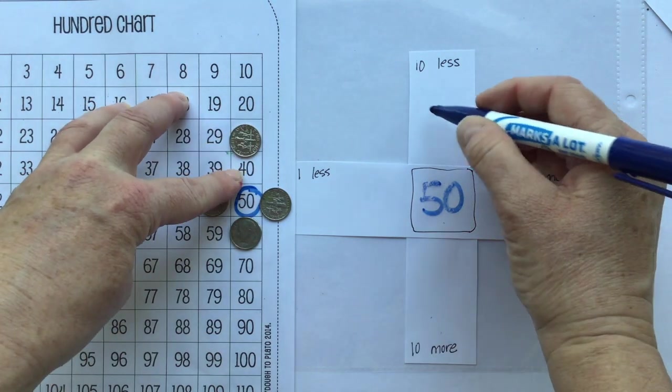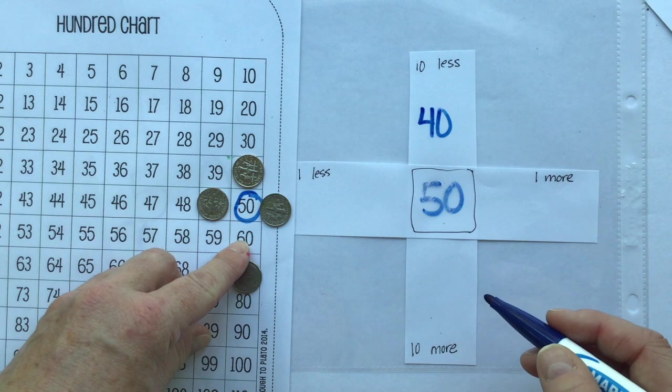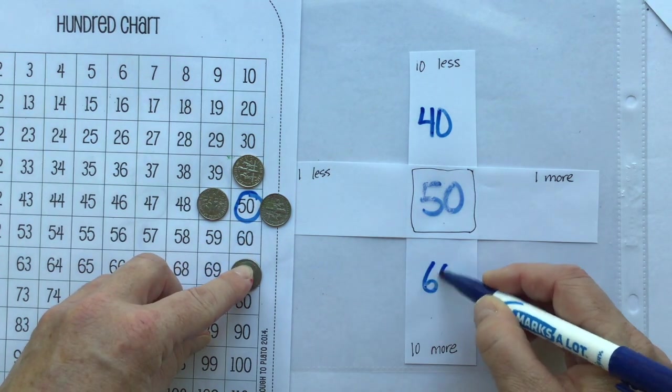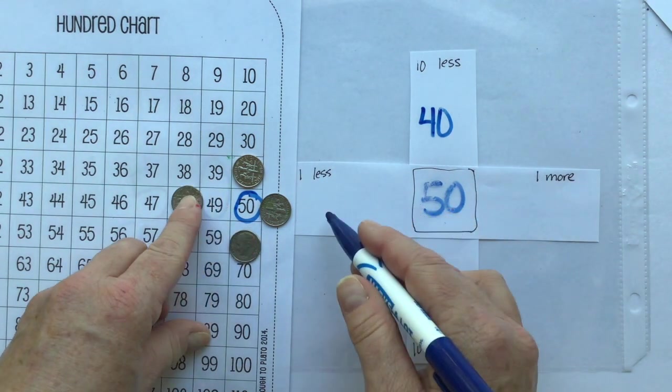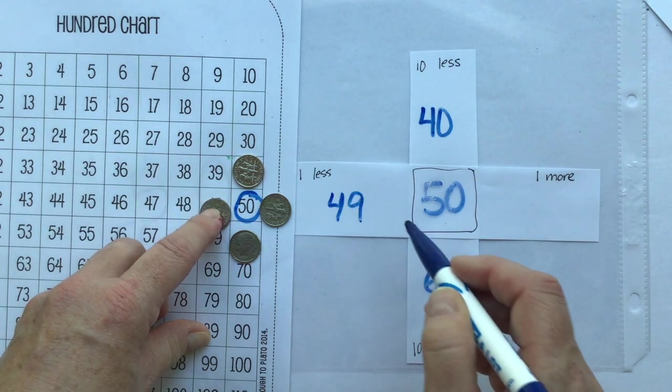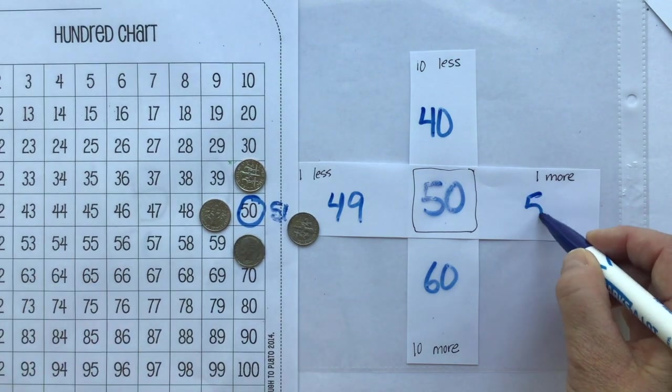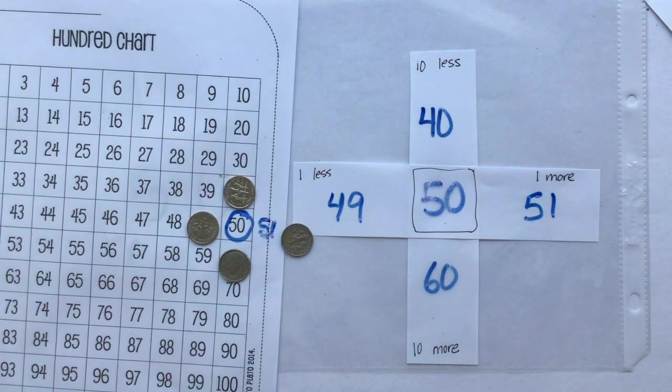So 10 less than 50 is 40. 10 more than 50, 60. One less than 50, 49. One more than 50, we know it's over here though, right? 51.